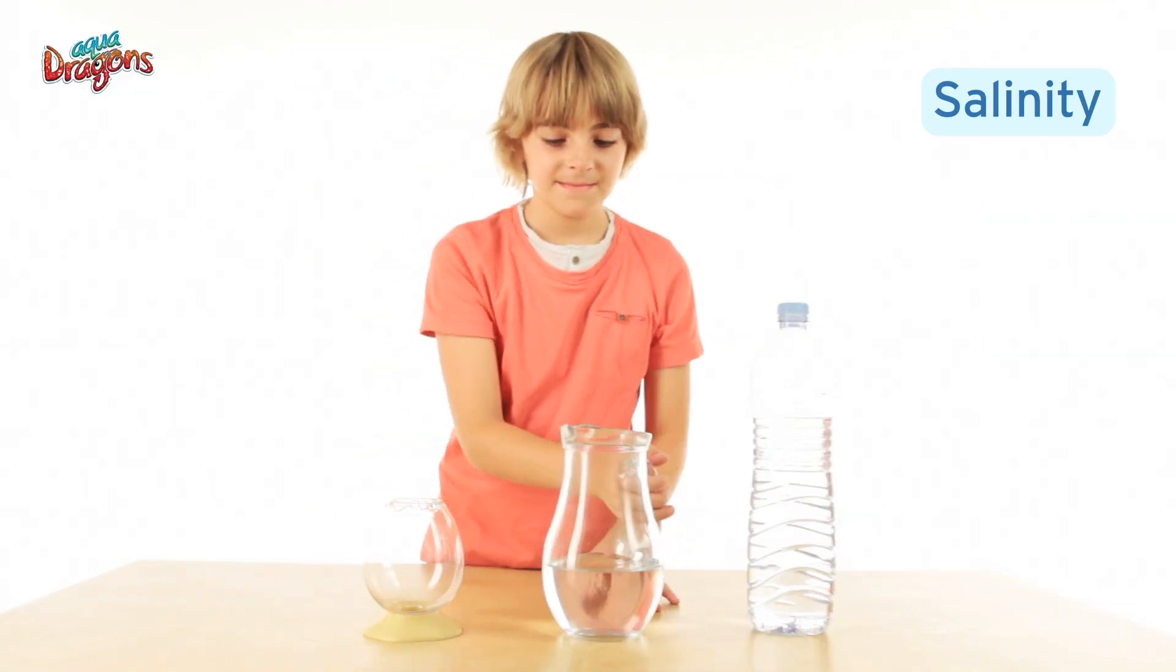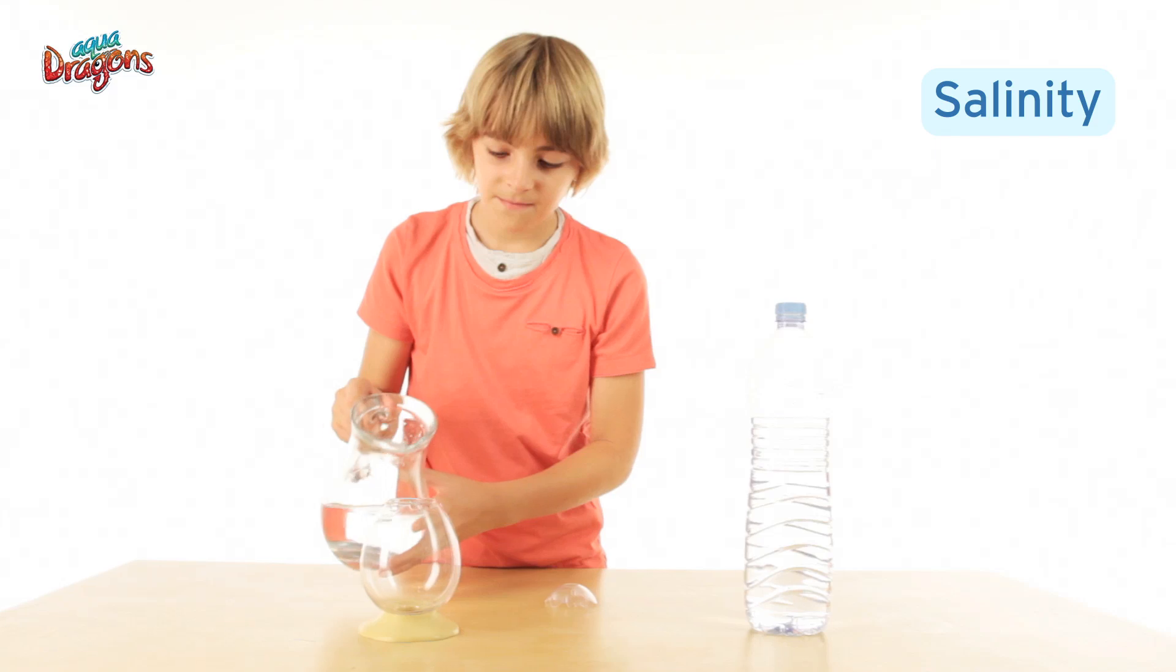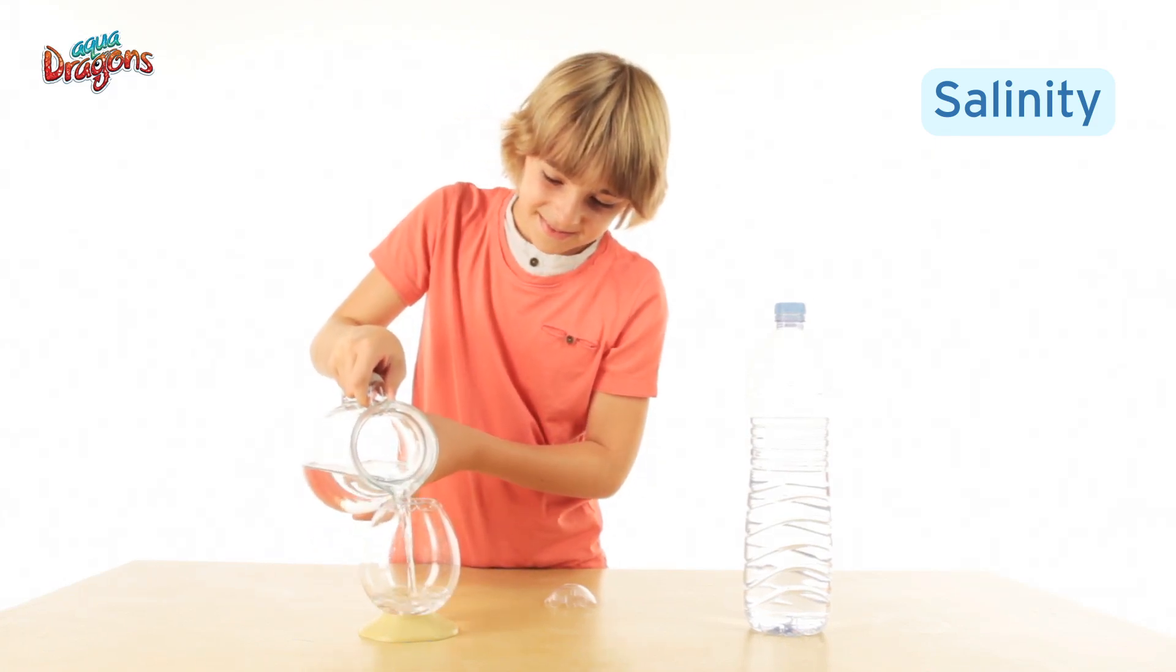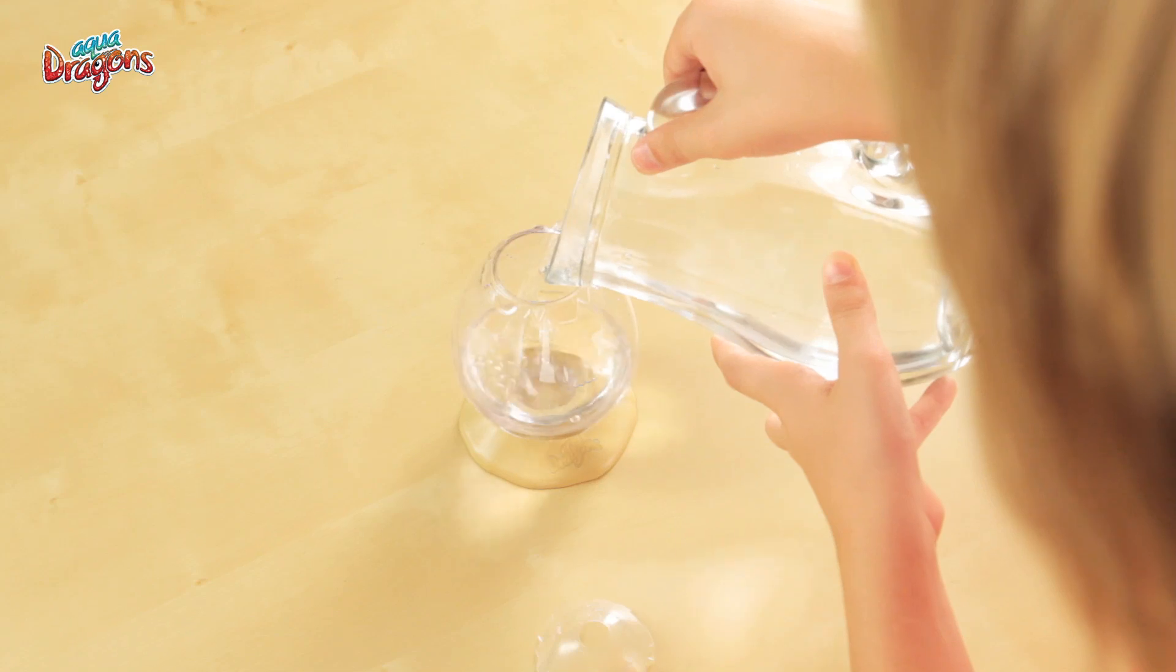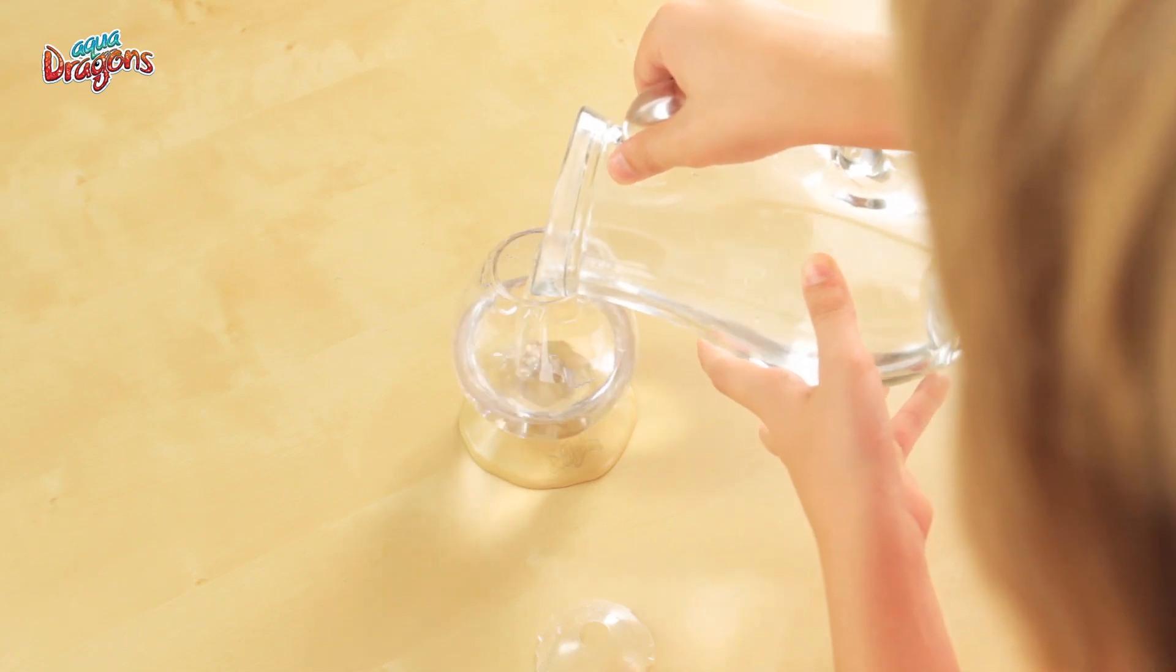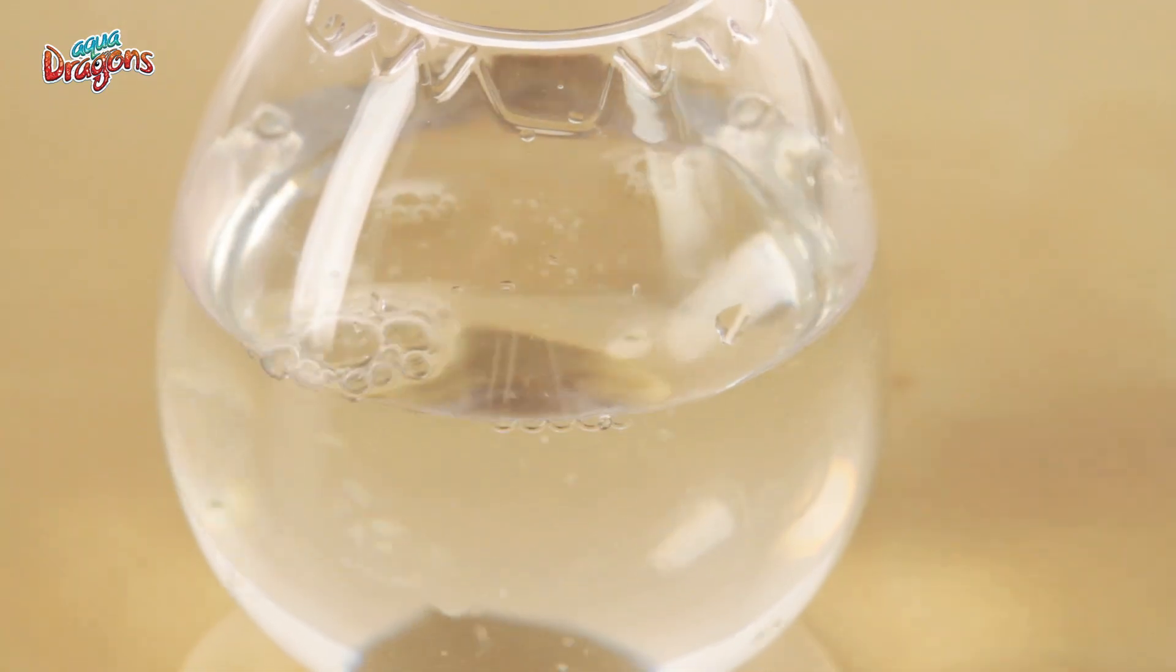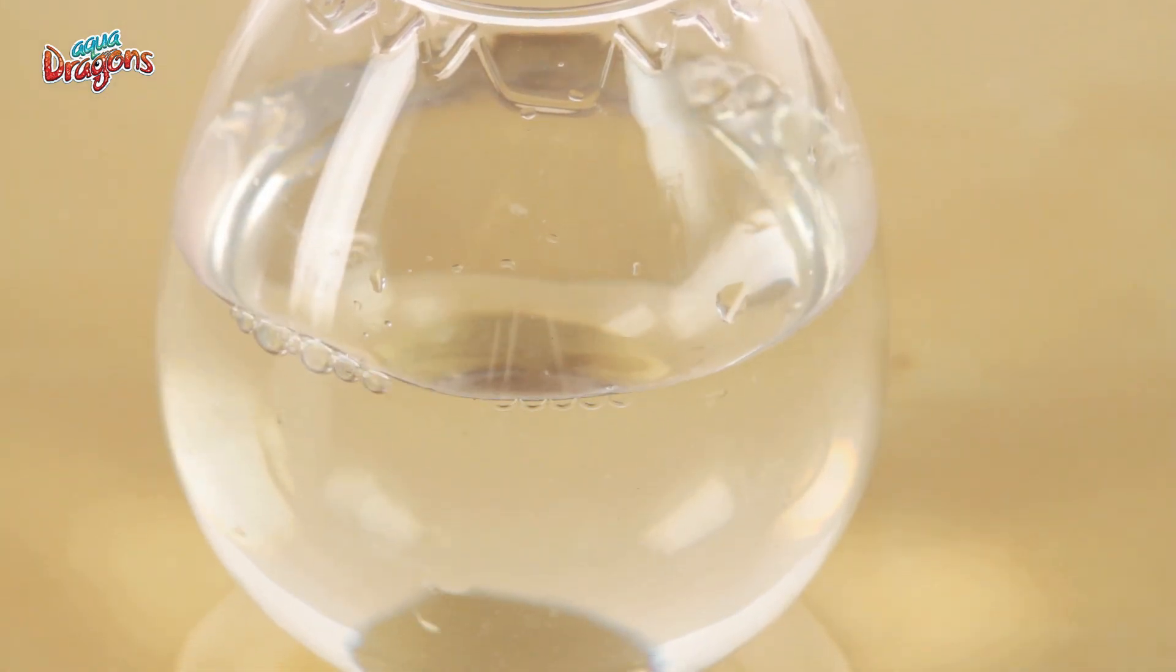Use the right amount of water, and don't change the water in the tank, because changing the water completely will result in the salinity level going down, and it's fatal for your aquadragons. If you just top up the water as it evaporates, the salinity level will stay stable because salt does not evaporate.